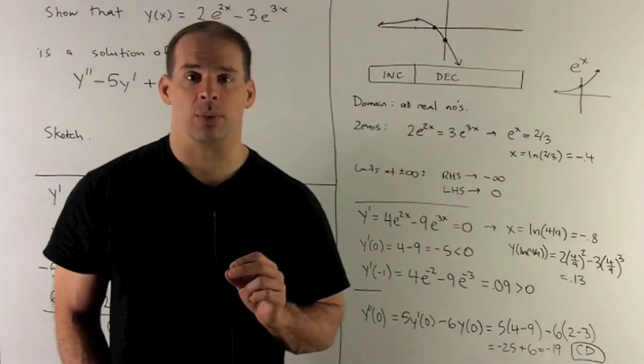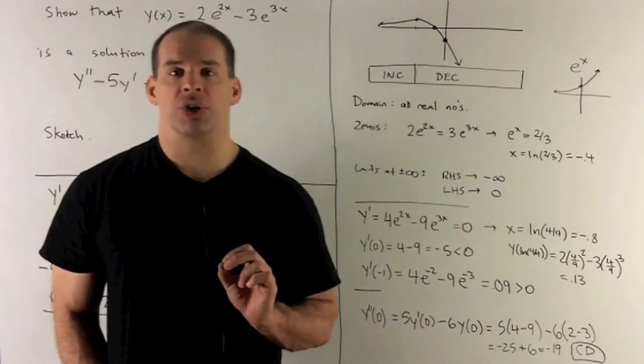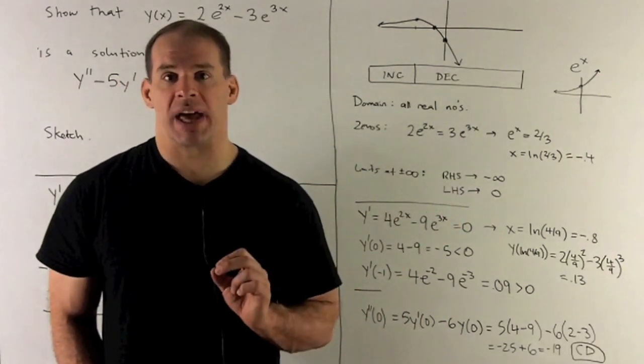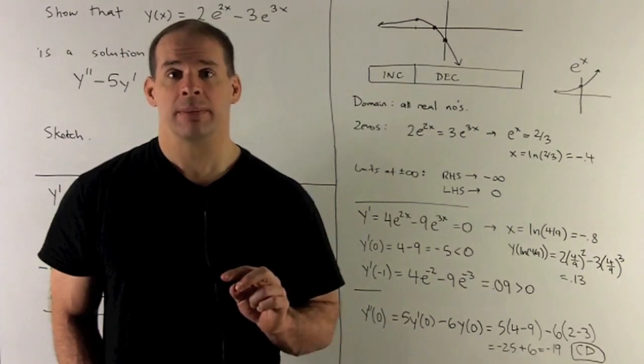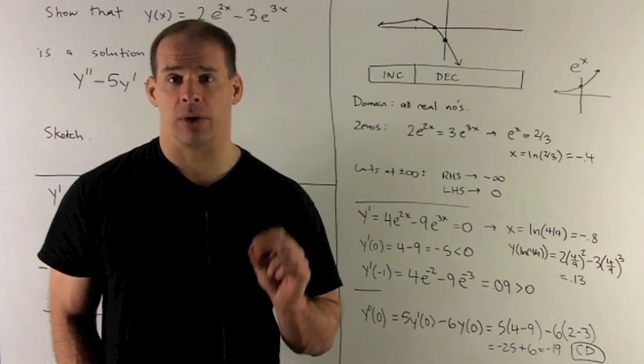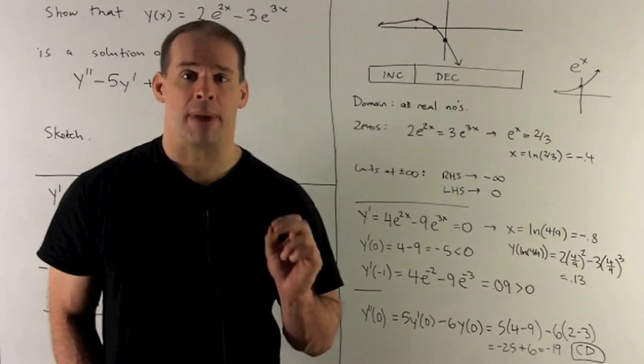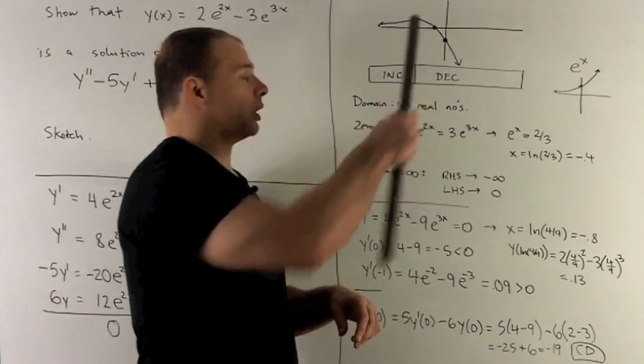So I have e^x = 2/3. To get the e out of the picture, we apply natural log to both sides. Natural log of e to anything is just anything, so we'll have x, and then on the other side, ln(2/3). I go to the calculator and get minus 0.4, roughly. So that'll give us this point here on the x-axis.